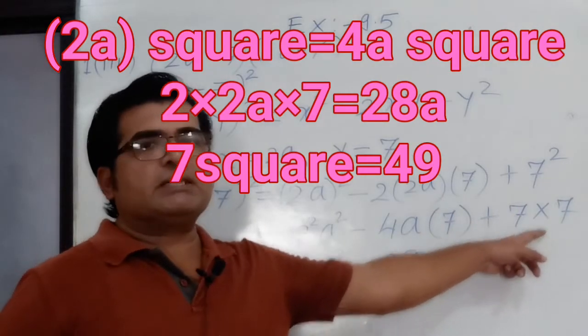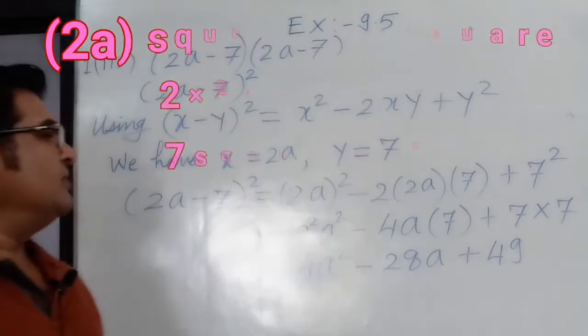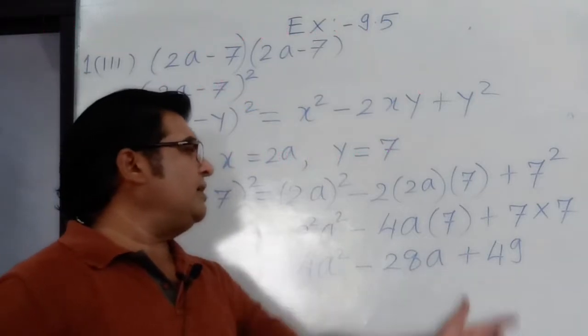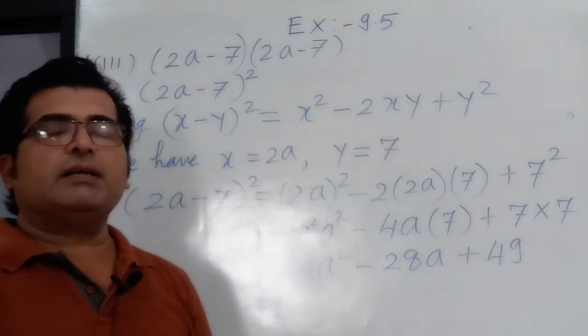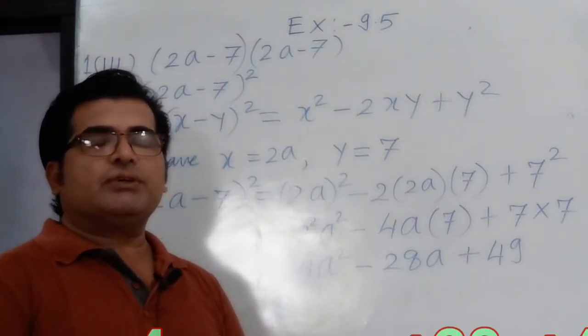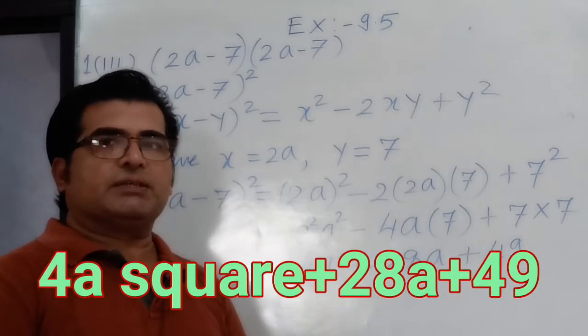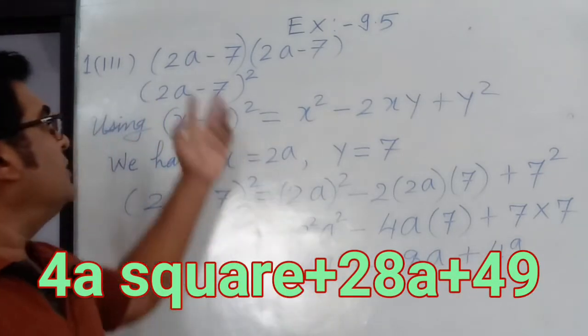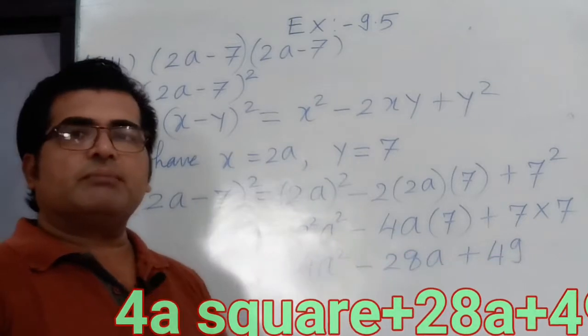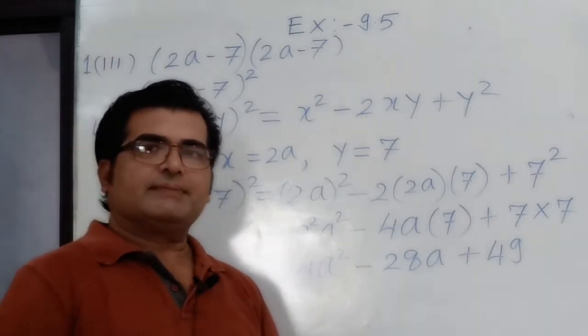So 4a square minus 28a plus 49 is the solution of this question. This is the product of (2a - 7) into (2a - 7). Thank you.